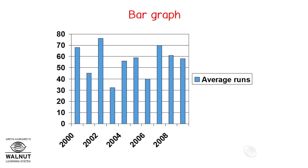Now take a look at this graph. This graph is made up of bars, so it is called a bar graph. As you can see, all the bars have the same width and are equally spaced from each other. However, each bar has a different height.